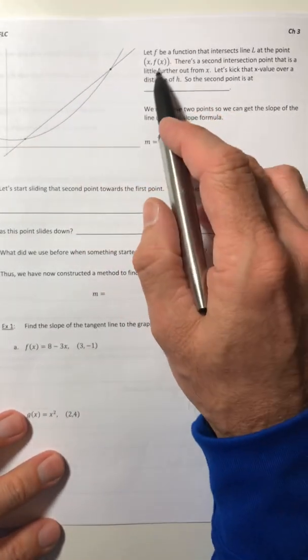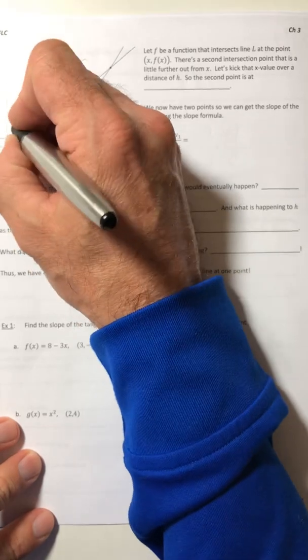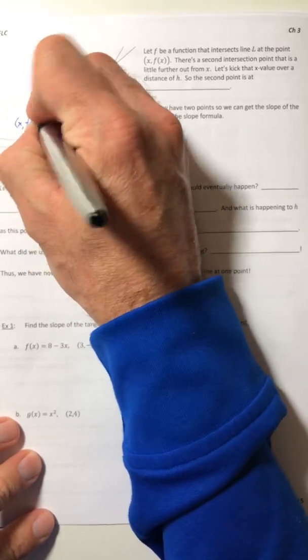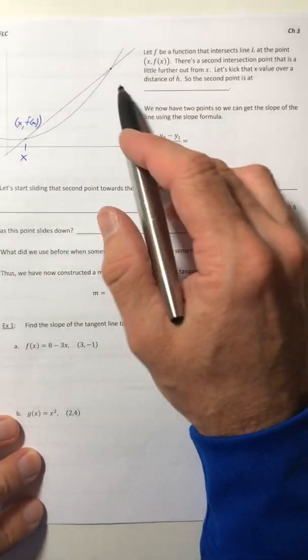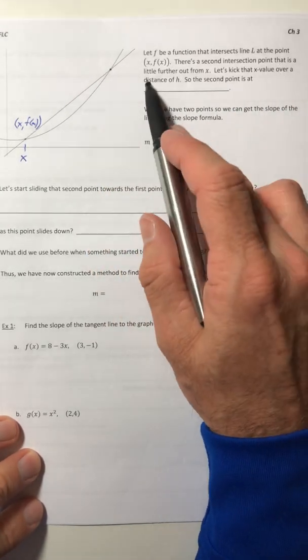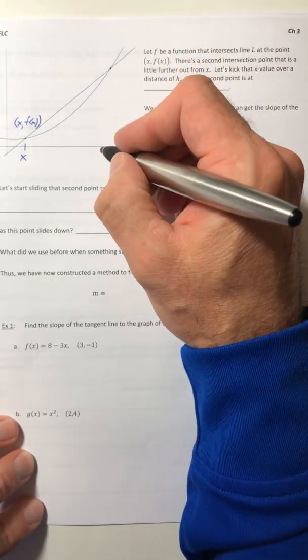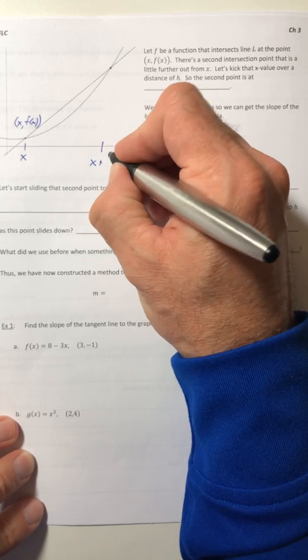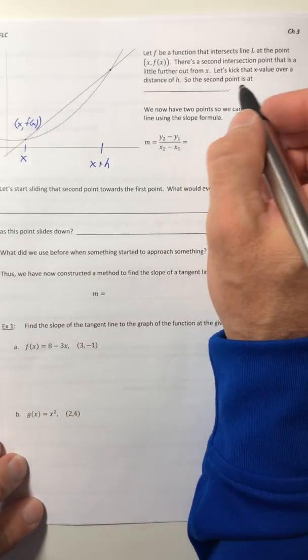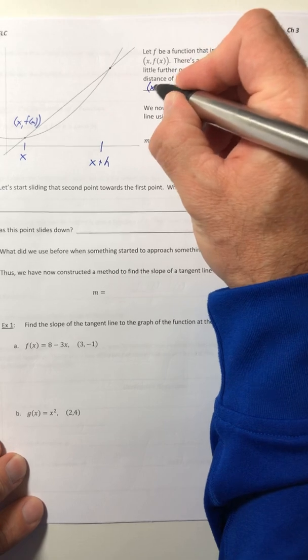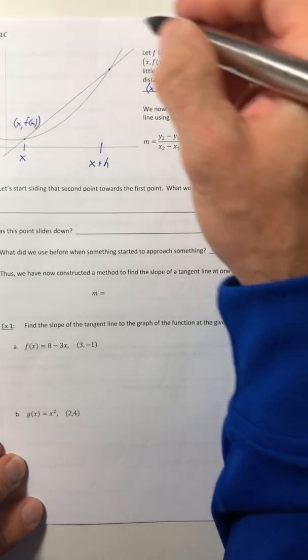So, we're going to let f be a function that intersects line L at the point (x, f(x)). So, there's a second intersection point. That is a little further out from x. So, let's kick that x value over a distance of h. So, we're adding a value of h to x and it kicks it out this way. So, the second point, this one up here, is x plus h comma f of x plus h.